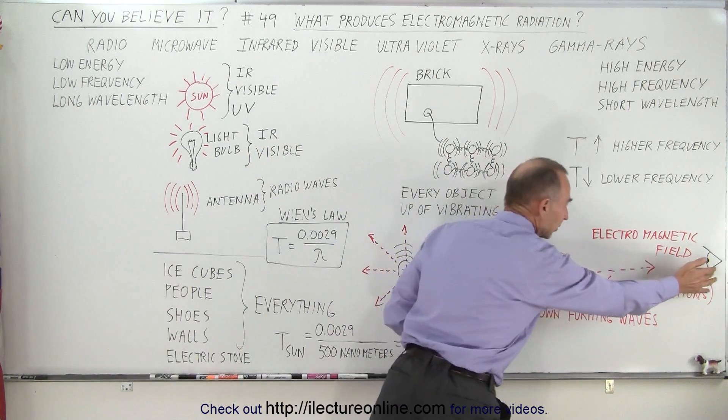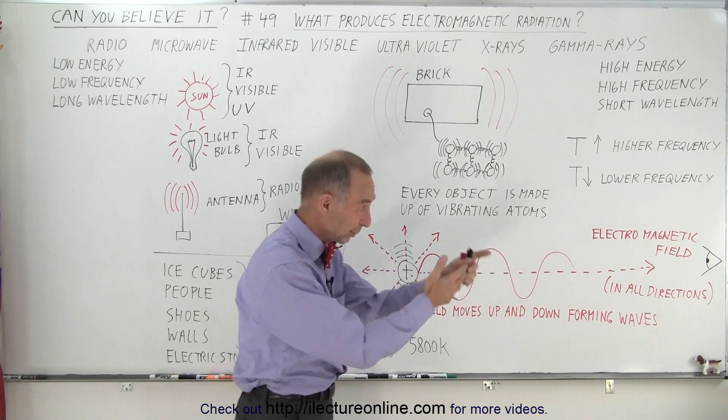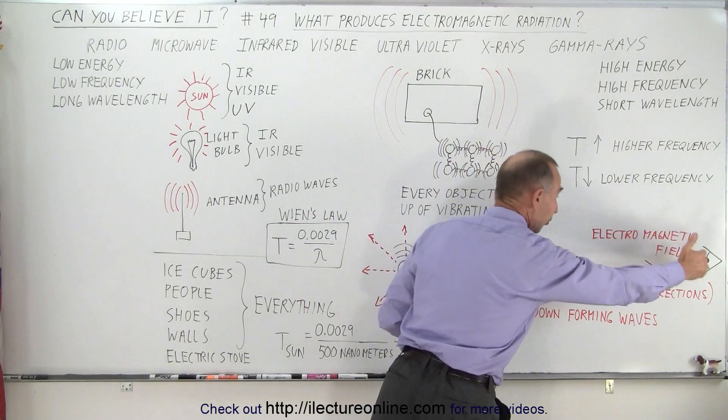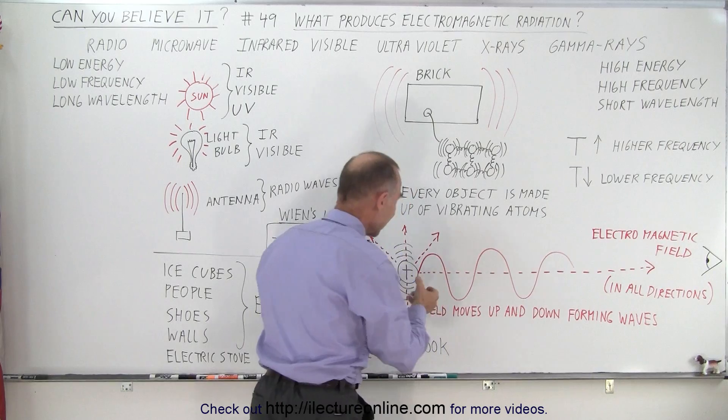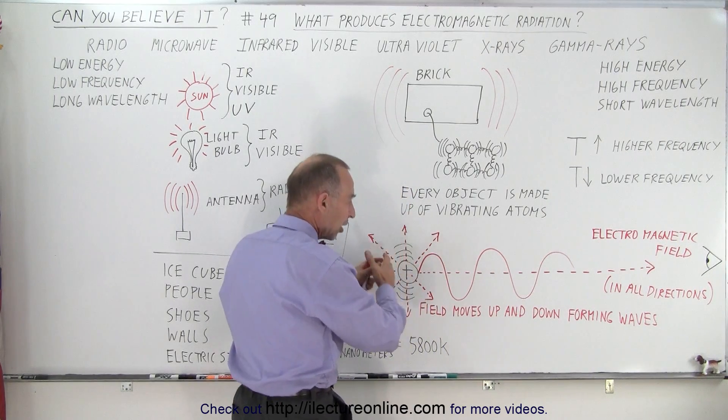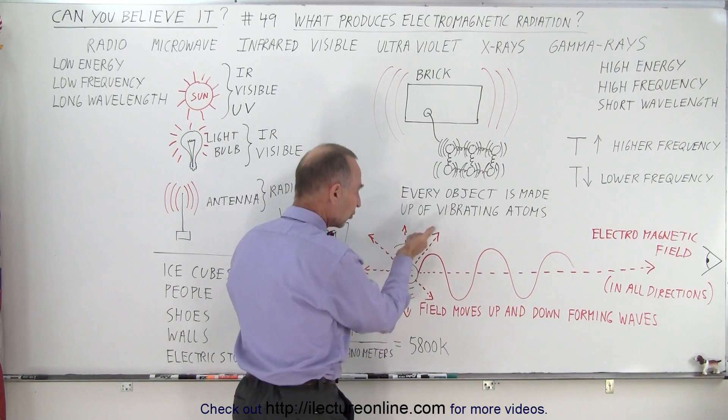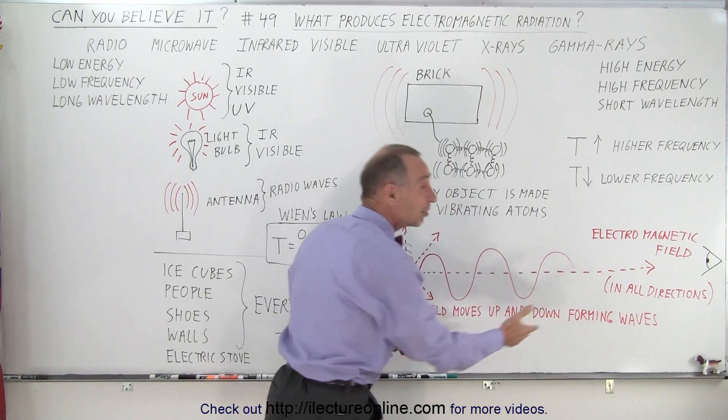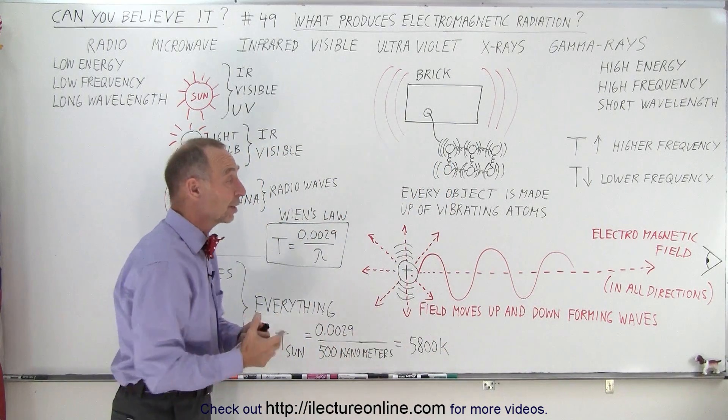But if you're over here, this is an eyeball, by the way, in case you're wondering what that symbol there is. If you're over here observing this electromagnetic field, then if the object causing the field goes up and down, it causes wiggles in the field. And those wiggles in the field, they become electromagnetic radiation.